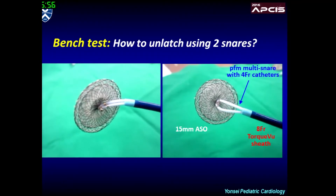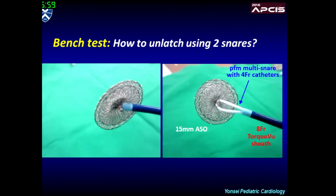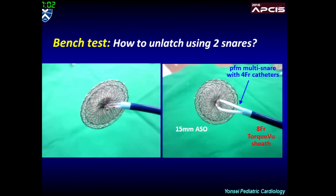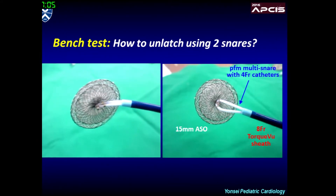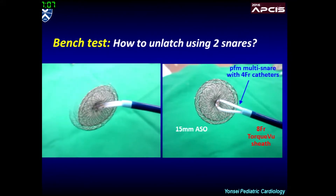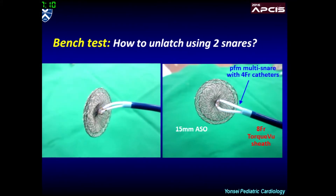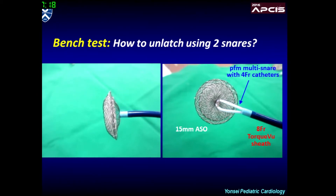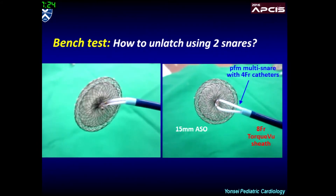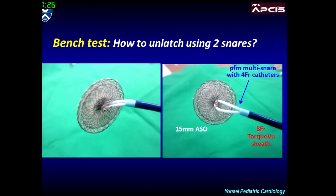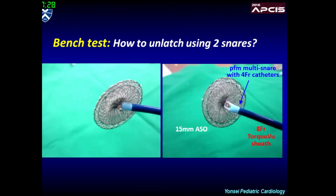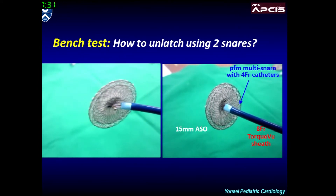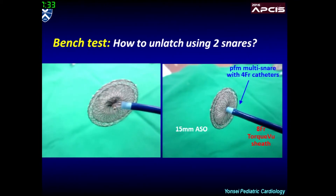I would like to explain the working principles of the double-snare technique using bench test video clips. Even though you use two snares, if you snare the same side, latching may occur. You can then push the first snare and pull the second snare a little bit, which may change the orientation of the hub. You can continue to pull both snare catheters to introduce the RA hub into the sheath. Alternatively, if you snare the opposite side of the RA hub, the device can be more easily introduced into the sheath.